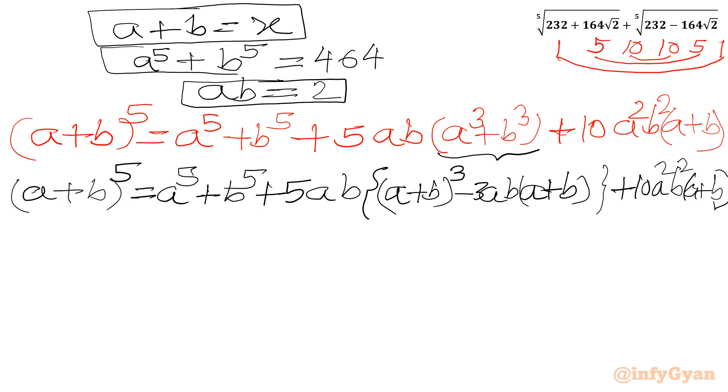Let's apply. So here I will be writing X power 5 equal to A power 5 plus B power 5 is 464, plus 5 times AB so 5 times 2, I will write 10 in the bracket A plus B whole cube so X cube, minus 3 times 2 so 6 A plus B is X, plus 10 times A square B square so can we write 10 times 2 square, so 10 times 4, 40, and A plus B is X.